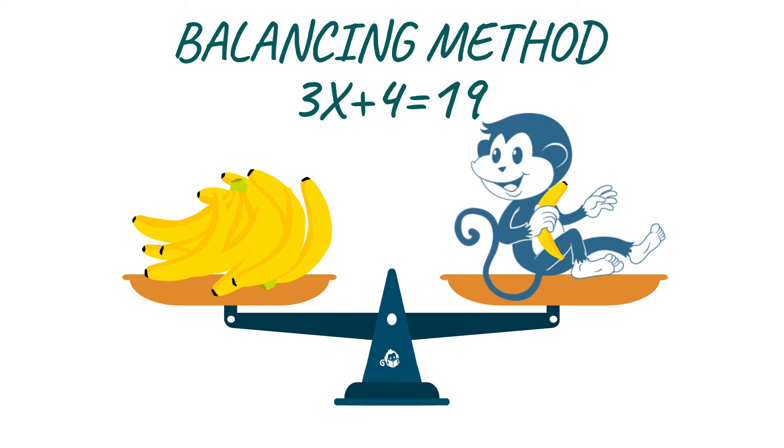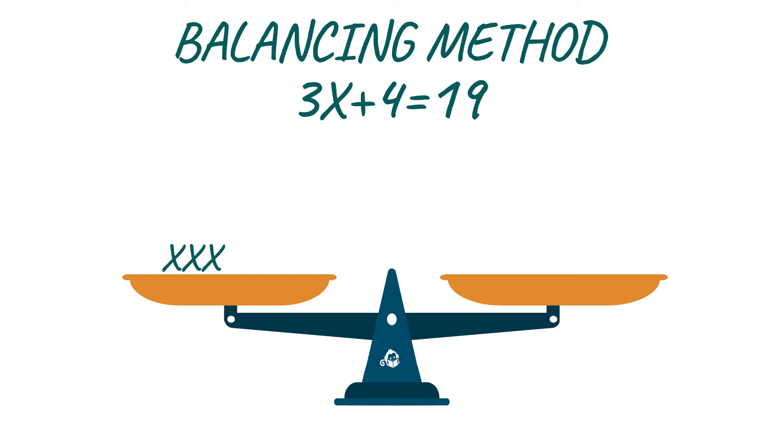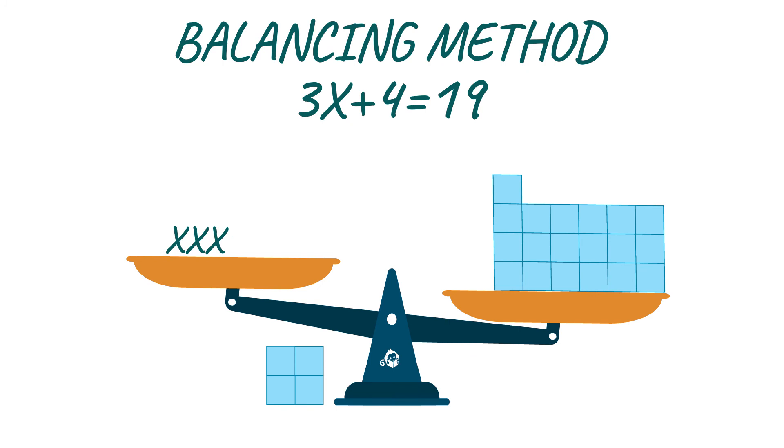You always want them to balance, right? The same on each side. On one side, you have three X's and four boxes. On the other side, you have 19 boxes. Because we want to keep the scales nice and balanced, if we remove something from one side, we have to remove it from the other. Let's take the four boxes from the left-hand side. And of course, we also take four boxes from the right-hand side.